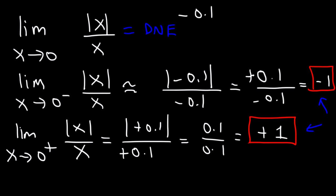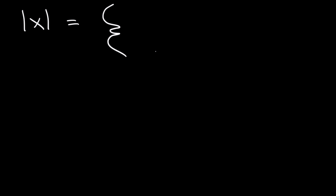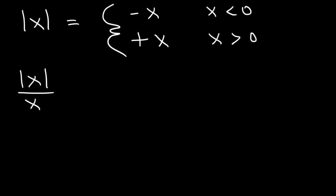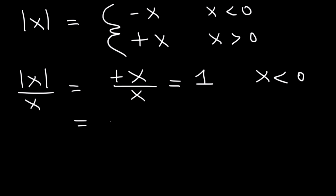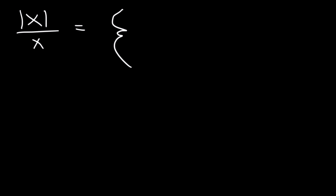That's how you evaluate these types of limits — you've got to check the left side and the right side. Something else that can help you is to realize that the absolute value of x can be broken up into a piecewise function: it equals negative x when x is less than 0, and positive x when x is greater than 0. So when you have the absolute value of x over x, this becomes negative 1 when x is less than 0 and positive 1 when x is greater than 0.